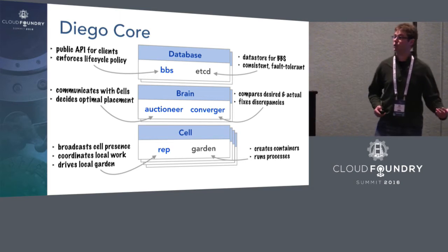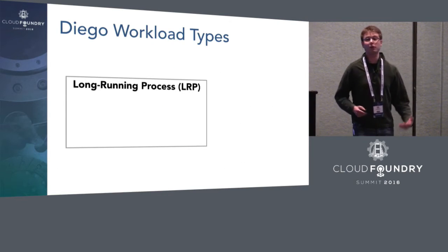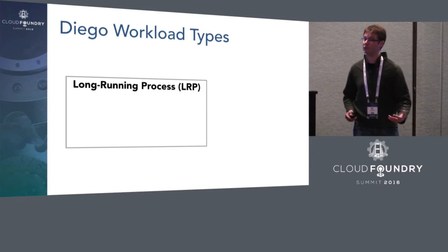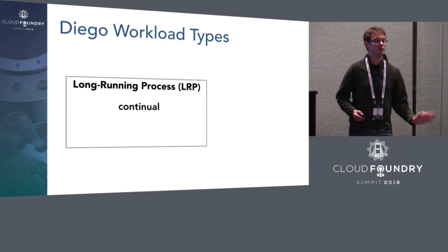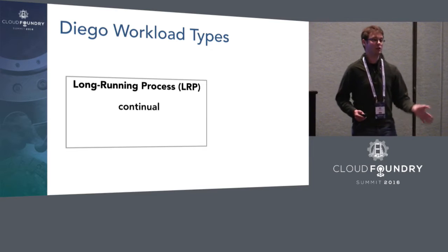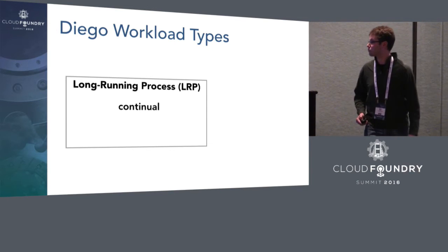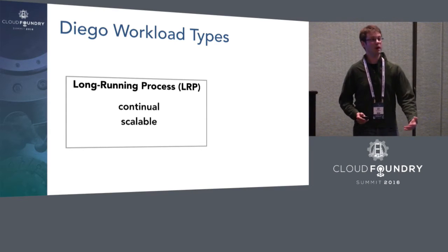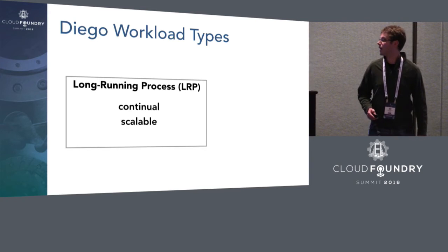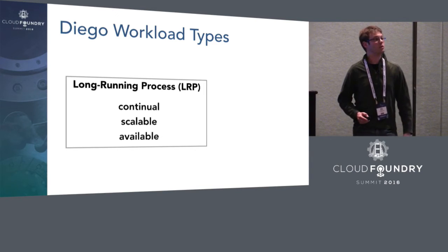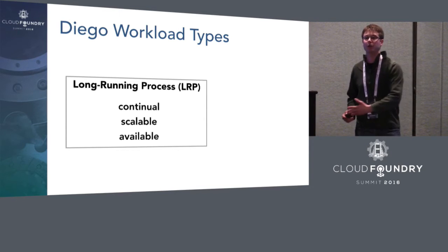The BBS manages two types of workloads. The first is the notion of a long-running process, or LRP. These are expected to be continually running; if they stop even with a successful exit condition, we consider it failed and reschedule to restart it. LRPs are scalable — you have one specification of the unit of work but can scale it to an arbitrary number of instances. Diego also wants to make instances as available as possible, temporarily running more than the desired number during updates to achieve a seamless transition.